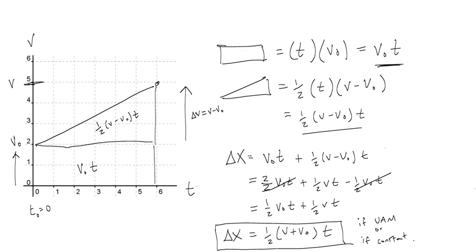It's a bit redundant to use this equation for constant velocity — for example, if velocity is constant at 5, then one-half times (5 plus 5) is still 5. But just know you can always use this equation regardless of whether it's constant velocity or accelerated motion.